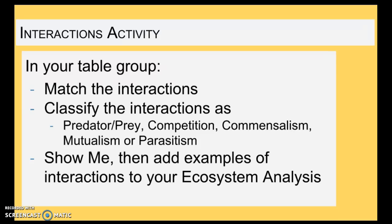If you were here, you did the interaction activity to help classify and solidify your understanding of these interactions. If you weren't here, you should come see me, look at some examples, and see if you can figure out what types of interactions those are, so you can add them to your ecosystem analysis. I want you to find specific examples of animal interactions in your ecosystem — find a mutualism interaction in the tundra or find parasitism in the desert. They're all over the place, all over the world. So, this is ecosystem interactions in a nutshell.